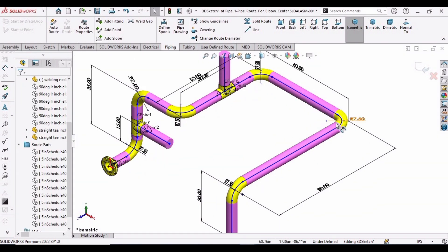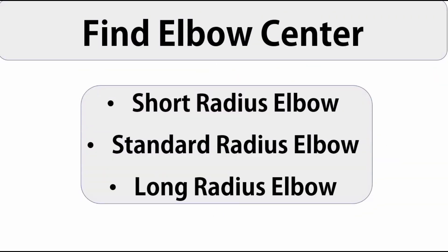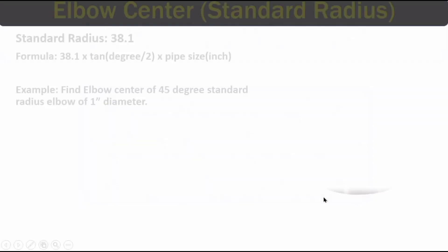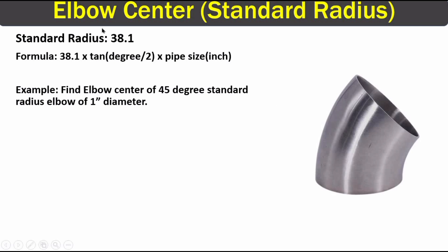In this video we will learn how to find the elbow centers of short radius elbow, standard radius elbow, and long radius elbow. We will start from the standard radius elbow because they are used mostly. The formula is: 38.1 multiplied by 10, into degree divided by 2, multiplied by the pipe size in inches.